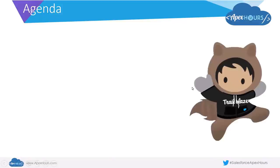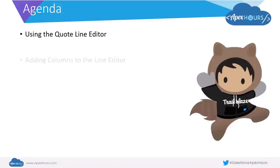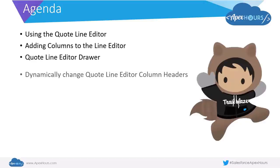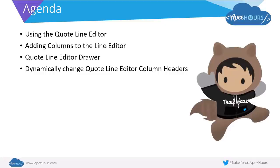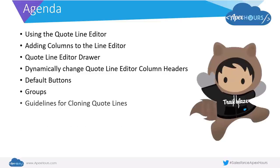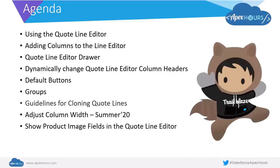In today's session, we will be looking at the Quote Line Editor: how to use it, adding columns to the line editor, the Quote Line Editor drawer, how to dynamically change the column headers, and all the default buttons the Quote Line Editor offers. We'll look at how to create groups and ungroup, guidelines for cloning quote lines, adjusting column width — a new feature from Summer 20 — how to show product image fields, and finally the line editor package settings.